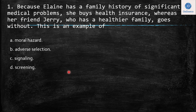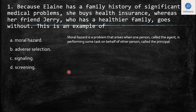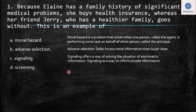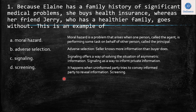Moral hazard is a problem that arises when one person called the agent is performing some task on behalf of another person called the principal — there is a strict relationship between these two people. Adverse selection is when the seller knows more information than the buyer does. Signaling offers a way of solving asymmetric information — it's a way to convey private information. And screening happens when an informed party tries to get the other party to reveal information.